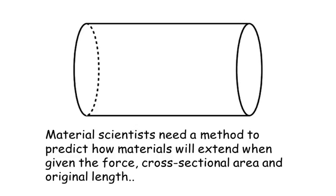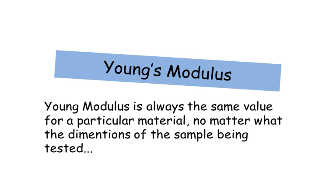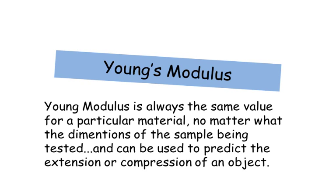Material scientists need a method to predict how materials will extend when given the force, cross sectional area and the original length of a material. Young's modulus is a value that assigns a particular property — you could think of it as the stiffness of a material. It's a value that's always the same for a particular material, no matter what the dimensions of the sample being tested, and it can be used to predict the extension or compression of an object.